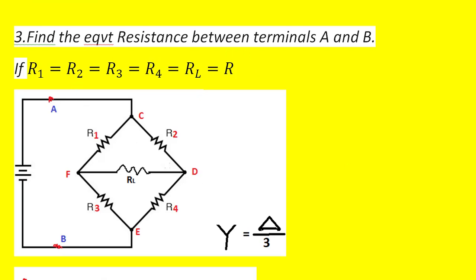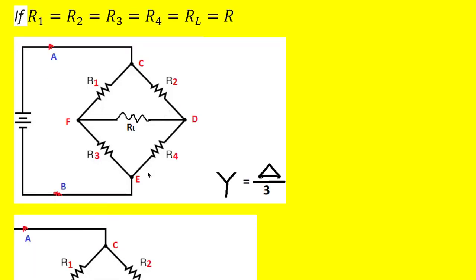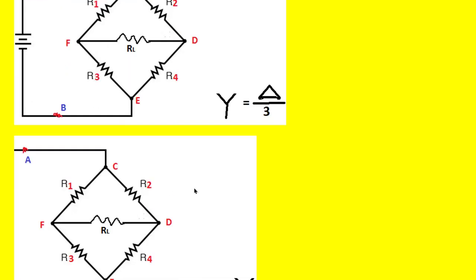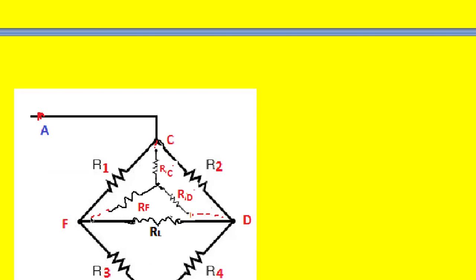Coming to the third problem: find the equivalent resistance between terminals A and B, given that R1 = R2 = R3 = R4 = Rl = R. Looking at the diagram we have R1, R2, R3, R4, and Rl, with a supply across terminals A and B. Removing the supply and keeping terminals A and B, we identify an upper delta formed by R1, R2, and Rl.